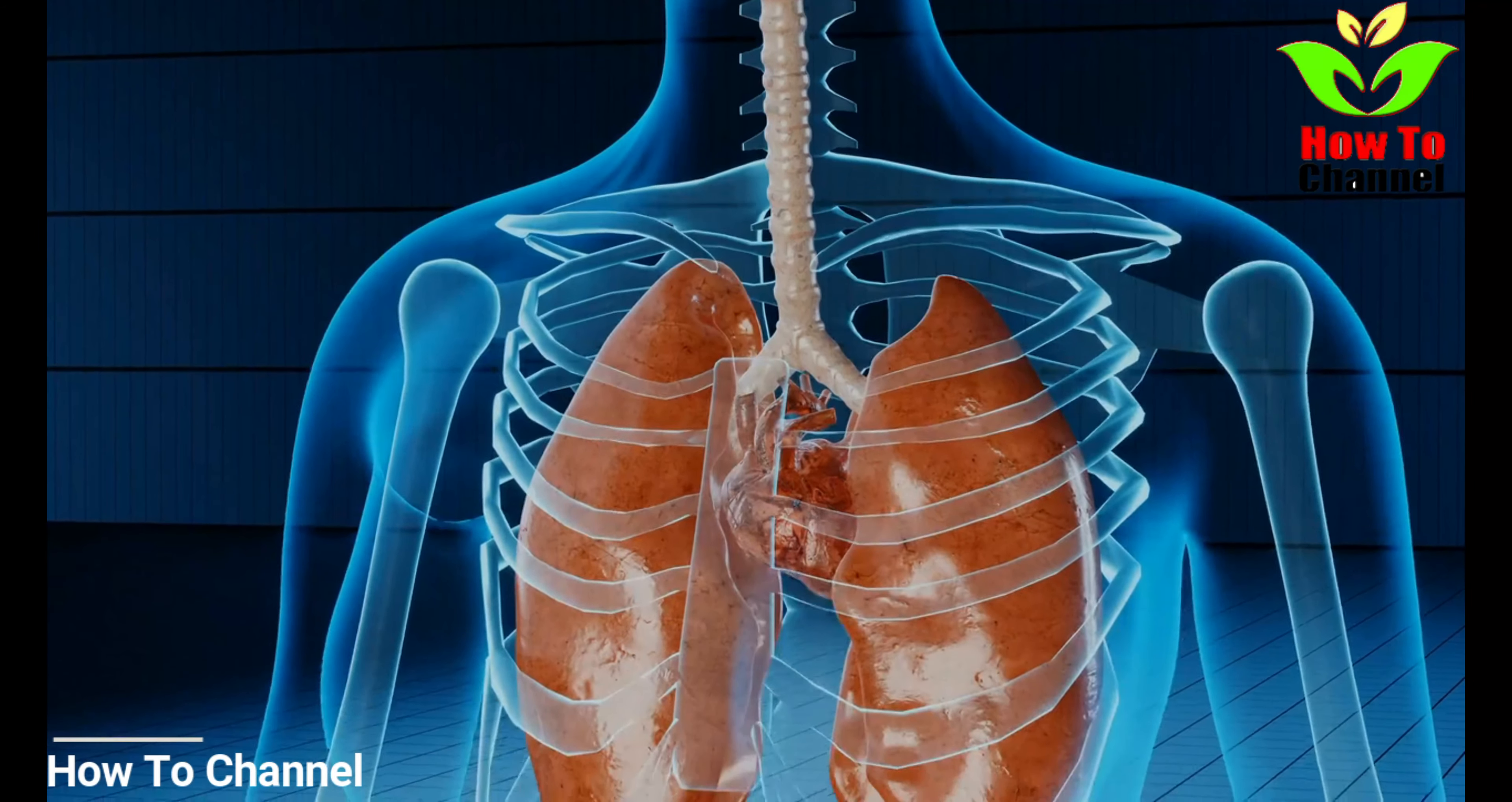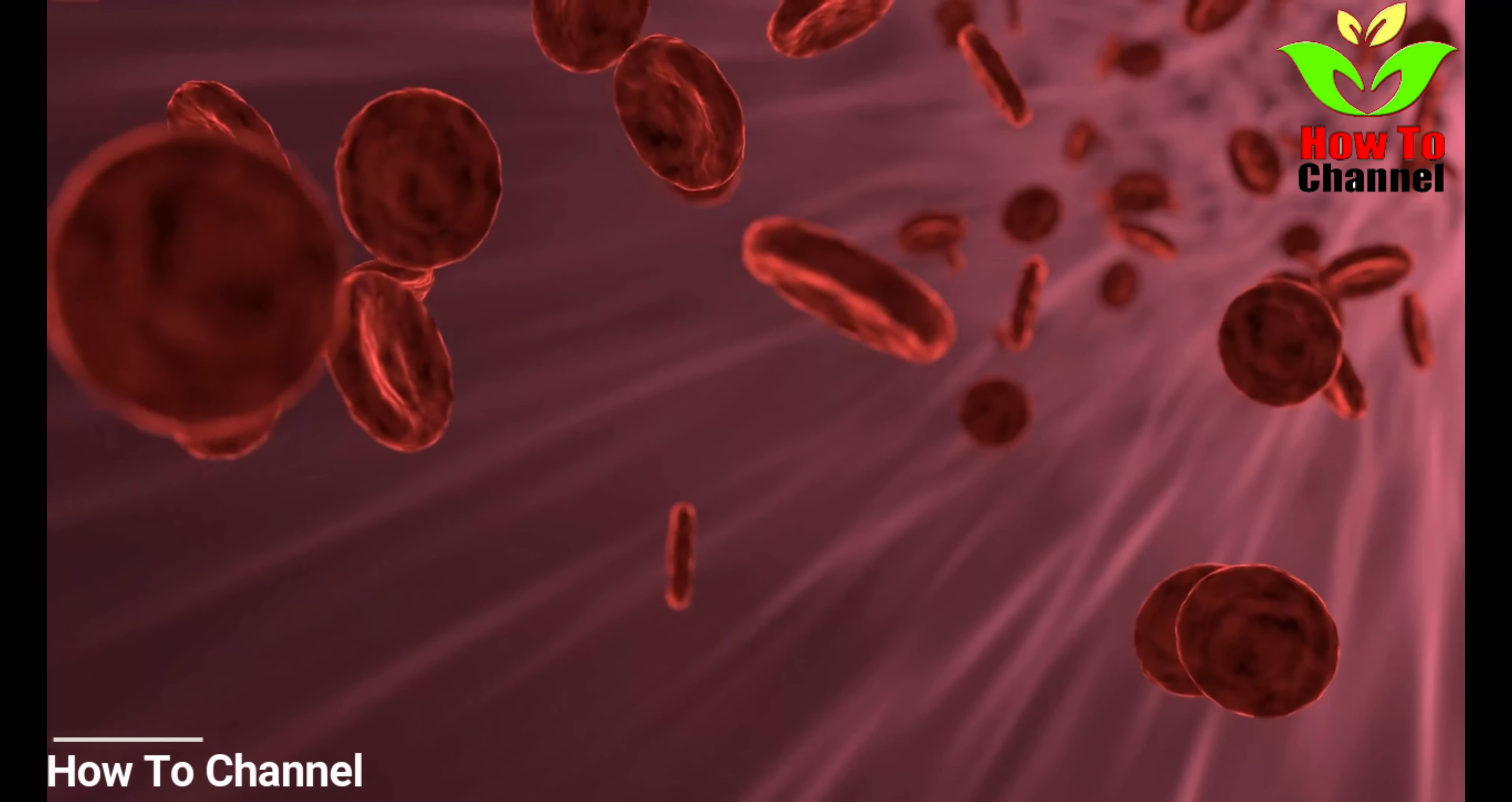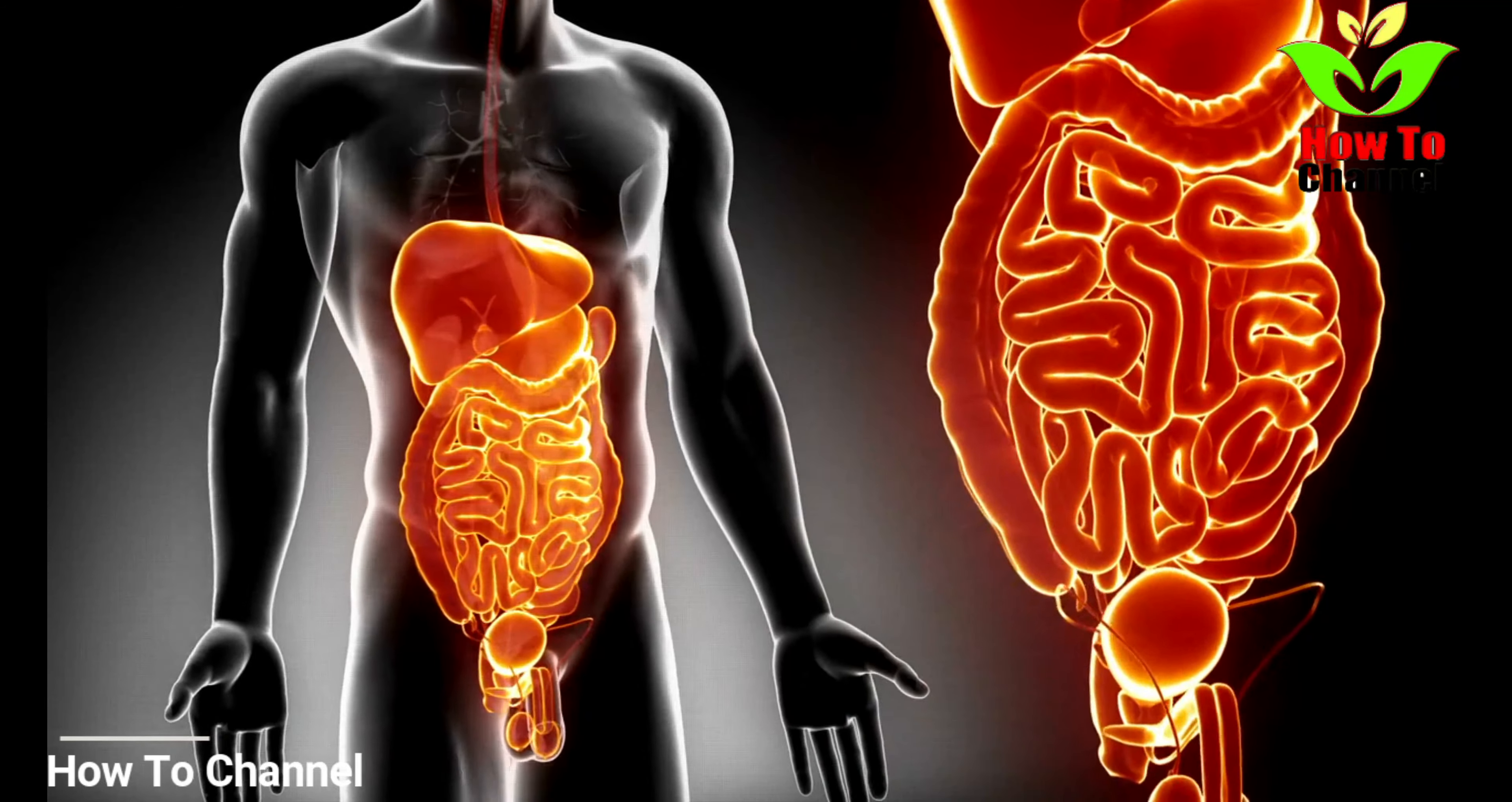Flax seeds contain a lignin compound, SDG, that has a positive effect on lowering cholesterol. An animal study focused on how efficiently it could reduce plaque formation in the arteries. Researchers fed a group of rabbits flax seeds after a high cholesterol diet, while another group was not given flax seeds. After a few days, the research team found a 40% reduction in plaque formation in animals that ate flax seeds. That's huge.